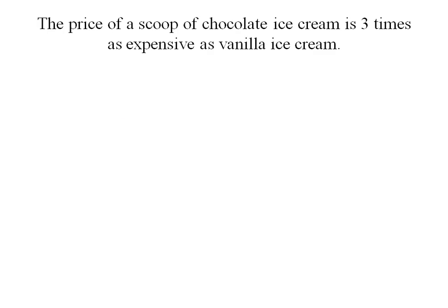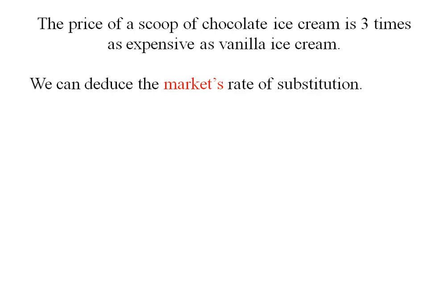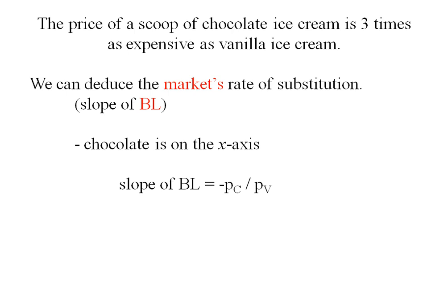The price of a scoop of chocolate is three times that of vanilla. From this information we can deduce the market's rate of substitution — that is, the slope of the budget line. With chocolate on the x-axis, the slope of the budget line is the negative of the price of chocolate divided by the price of vanilla. Since chocolate is three times as expensive as vanilla, the slope of the budget line is negative three.